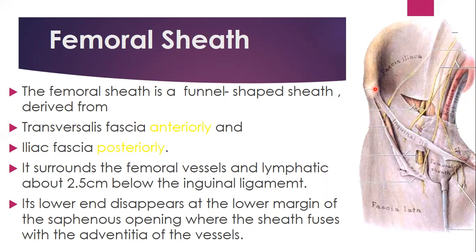The femoral artery is in the most lateral boundary of the sheath, the vein is intermediate, and on the most medial side is the femoral canal. This femoral sheath surrounds the femoral vessels and lymphatics about 2.5 cm below the inguinal ligament.